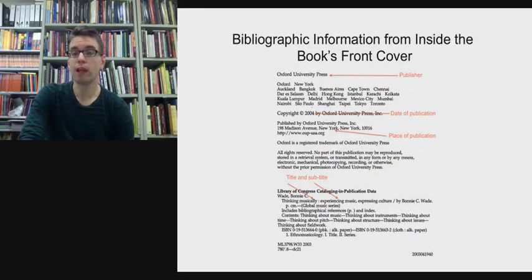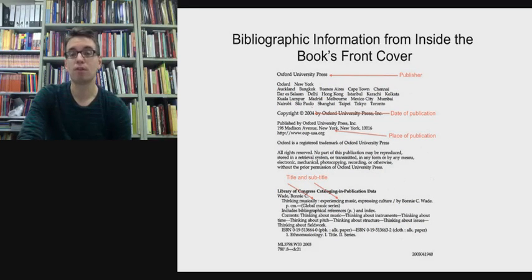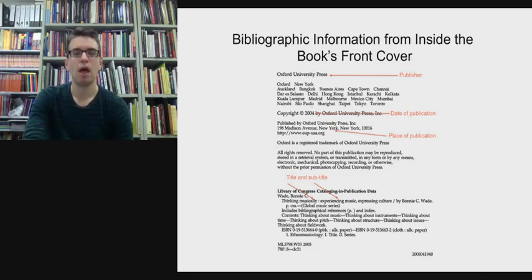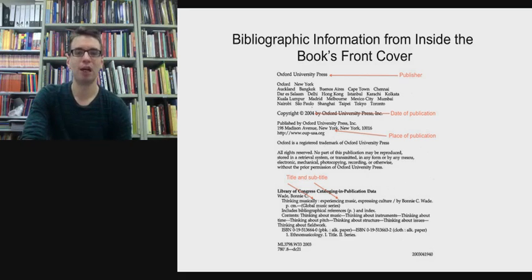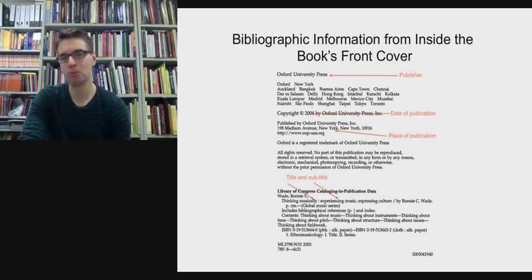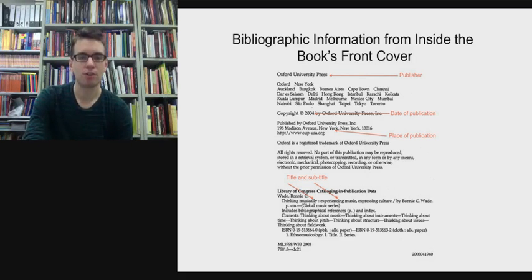If you go to the library — to the music reserve section or the library stack — you could look inside the front cover at the bibliographic information. It tells us the publisher is Oxford University Press, the date of publication following the copyright symbol, and crucially the place of publication — New York — because Oxford University Press doesn't just publish in Oxford; they also publish in New York and other cities around the world.